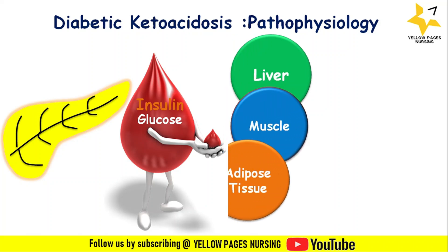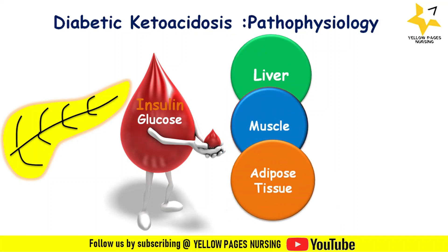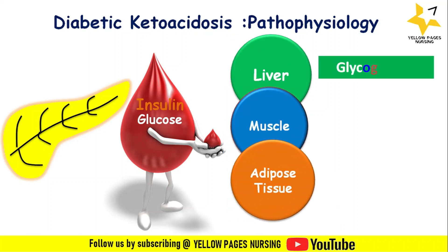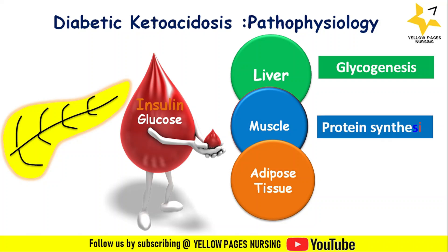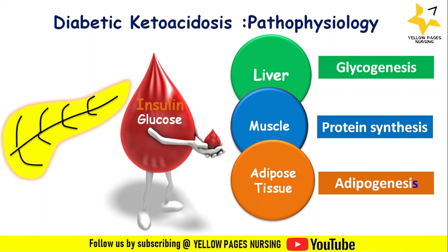In the liver, this glucose uptake enhances glycogenesis — that is, the formation of glycogen. In the muscle, it enhances protein synthesis. And in adipose tissue, it enhances adipogenesis — that is, the formation of adipocytes, or fat cells.